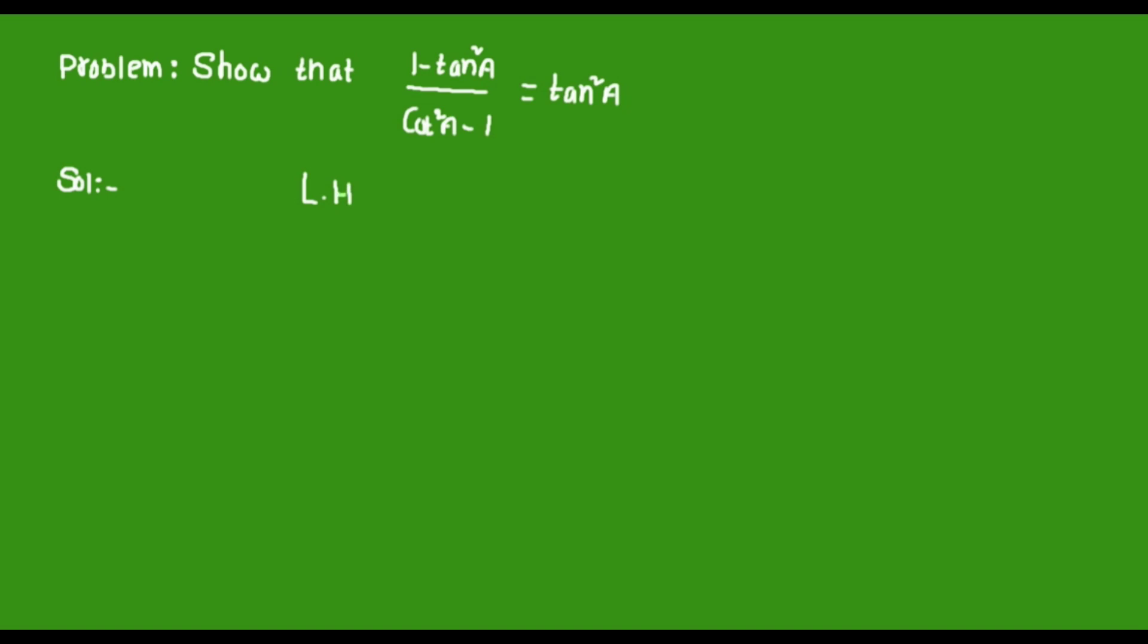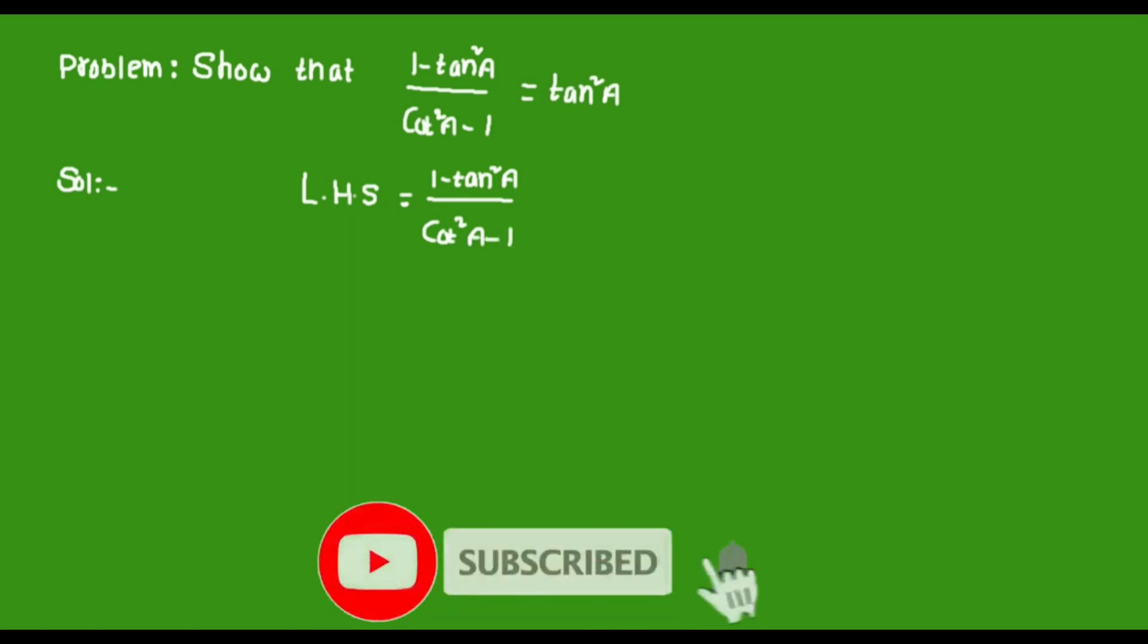Solution: First we are taking left hand side part of the problem, so LHS = (1 - tan²a)/(cot²a - 1). By observing, we will find that right hand side part contains only the term tan a.